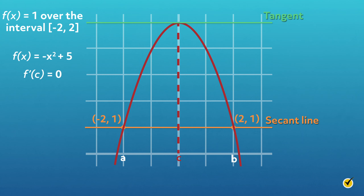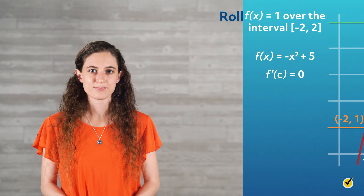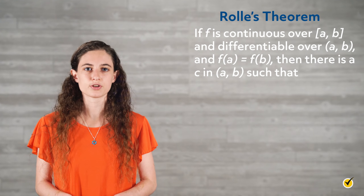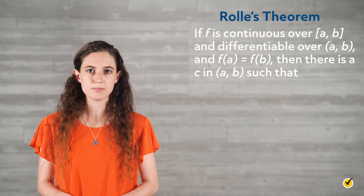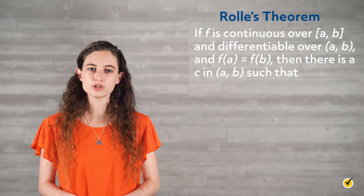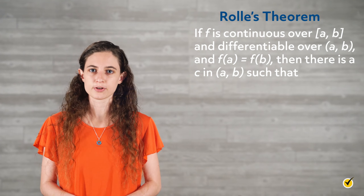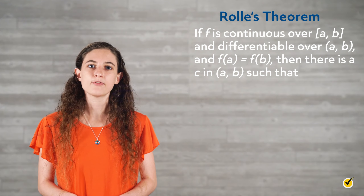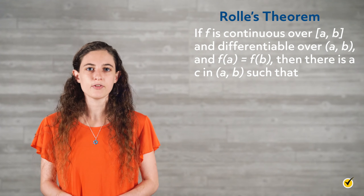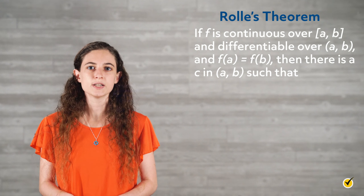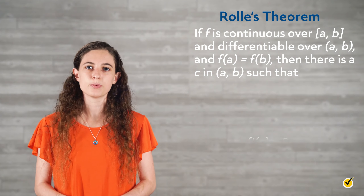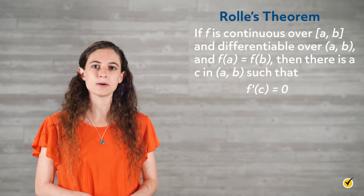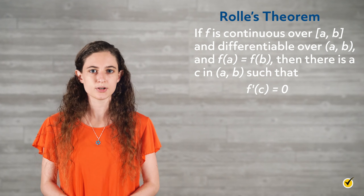Rolle's theorem says: if a continuous differentiable function's average rate of change over a closed interval is 0, then at some point in the interval the instantaneous rate of change must be 0. Formally stated: if f is continuous over the closed interval [a, b] and differentiable over the open interval (a, b), and f of a equals f of b, then there is a c in the open interval (a, b) such that f prime of c equals 0.